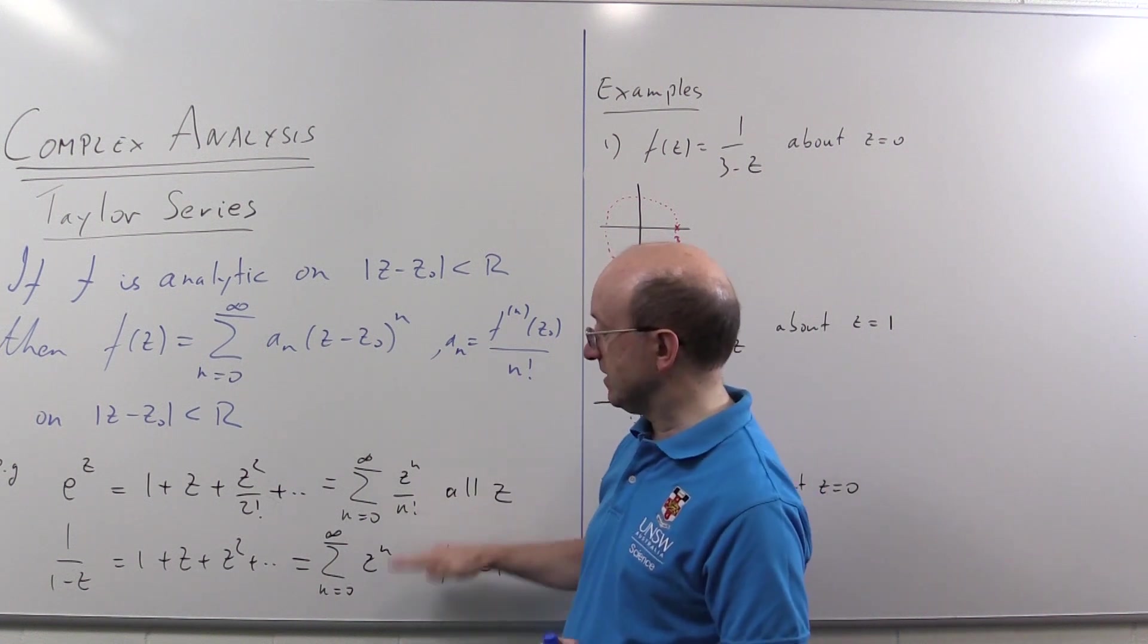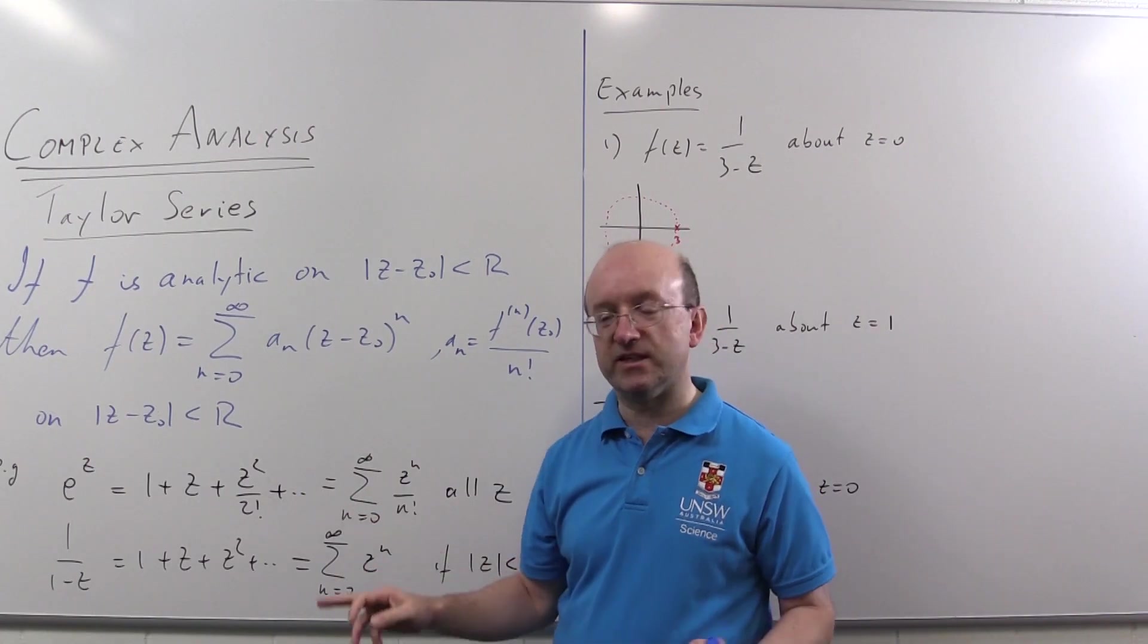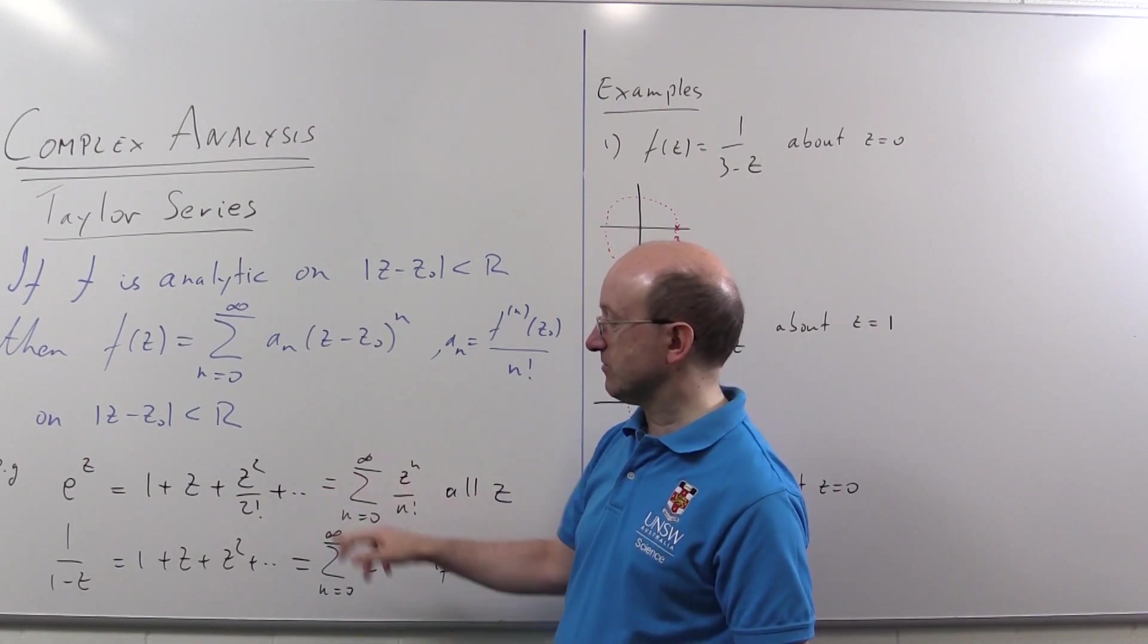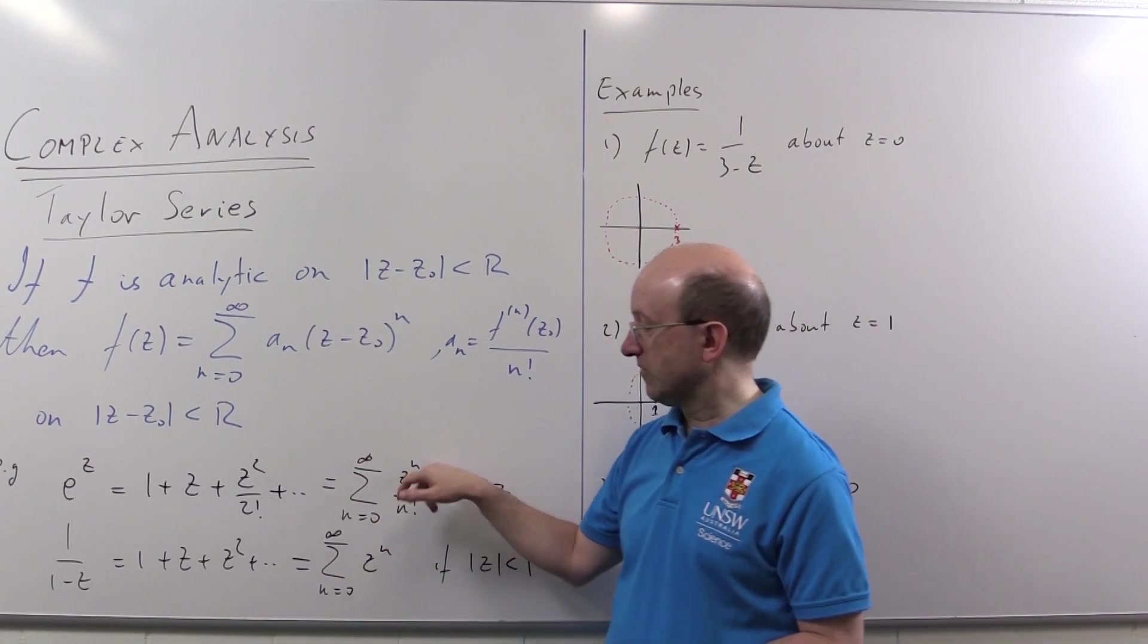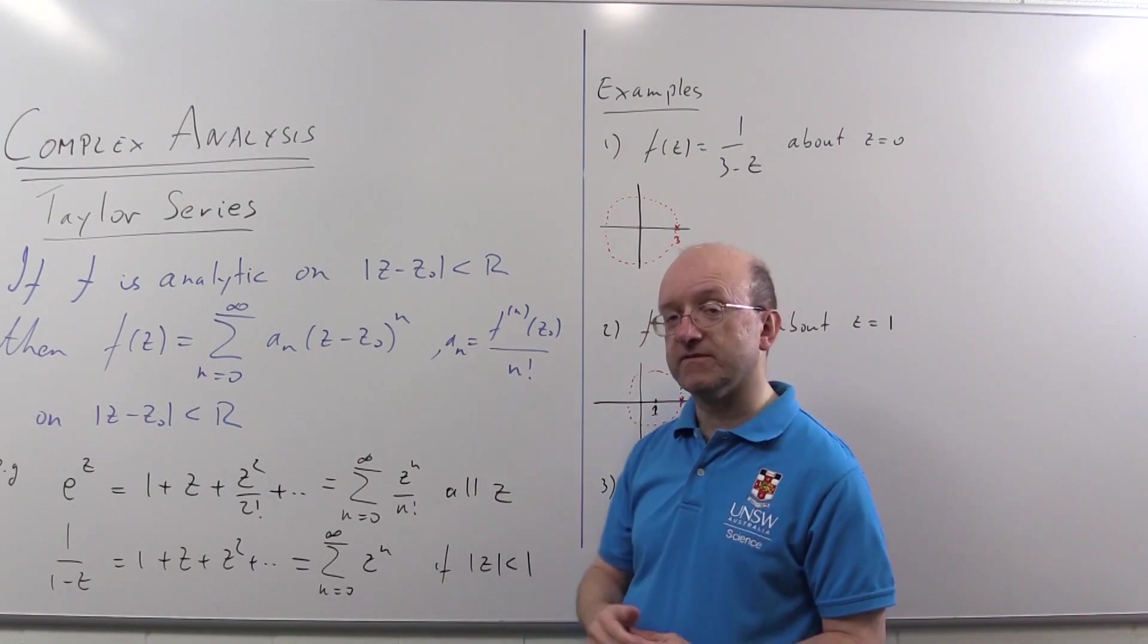And the two series you really have to know I've written up here. The exponential series, e to the z, around z equals zero: one plus z plus z squared over two factorial and so on, or sigma z^n over n factorial, which converges for all z.